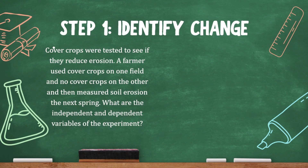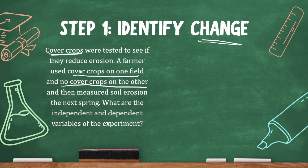Remember, the independent variable is the thing that you're changing. So let's identify what the farmer is changing first. He used cover crops on one field and no cover crops on the other. We're assuming that using cover crops is new and his standard method uses no cover crops — so cover crops will be the change.